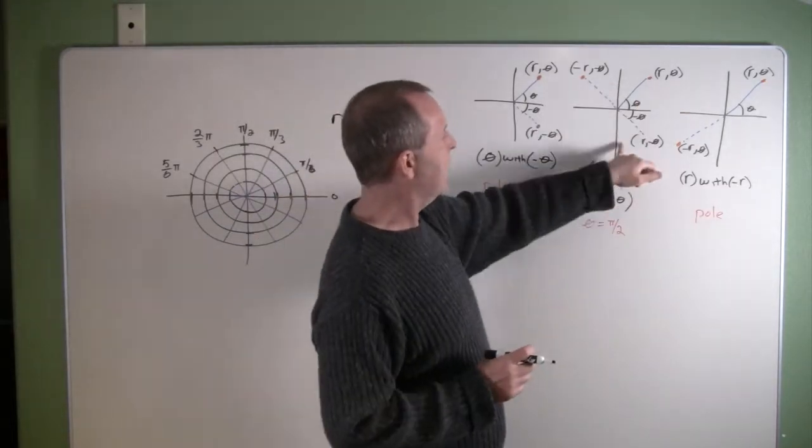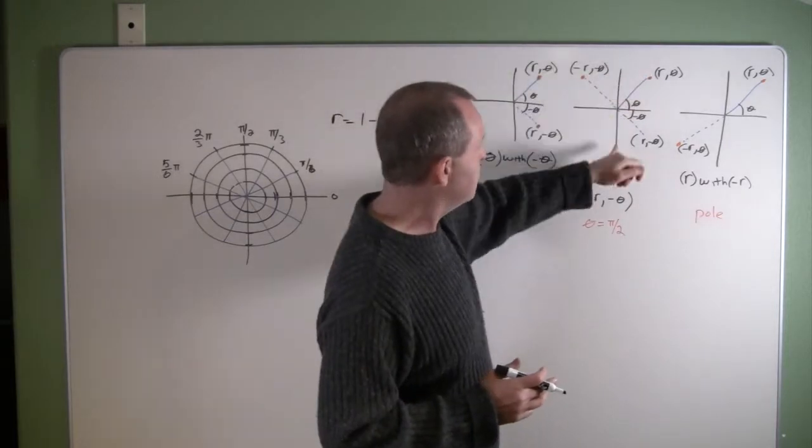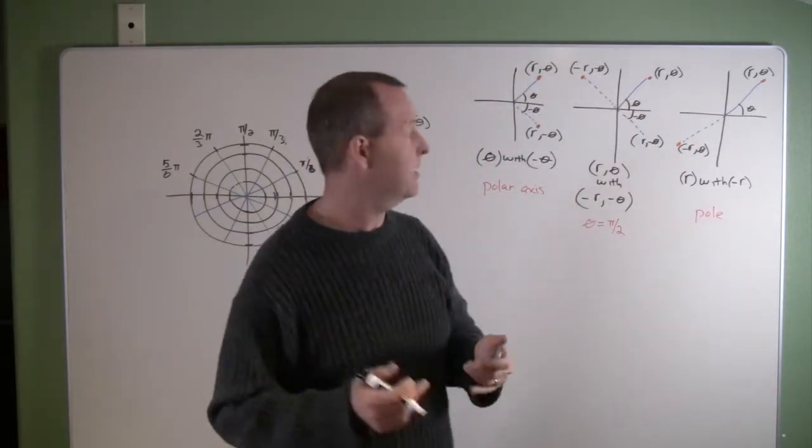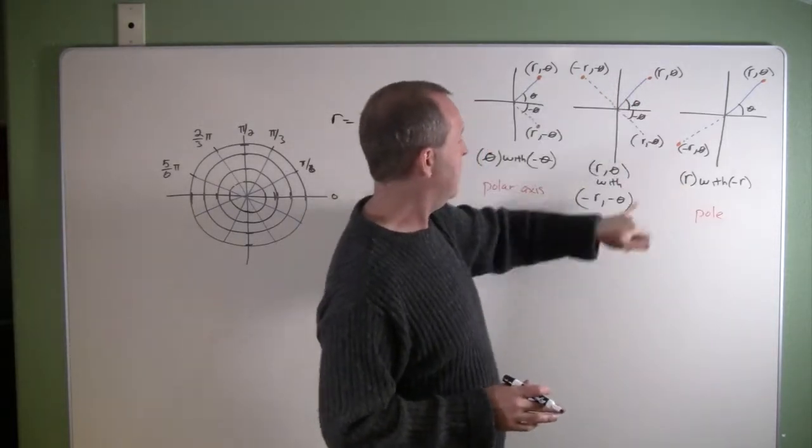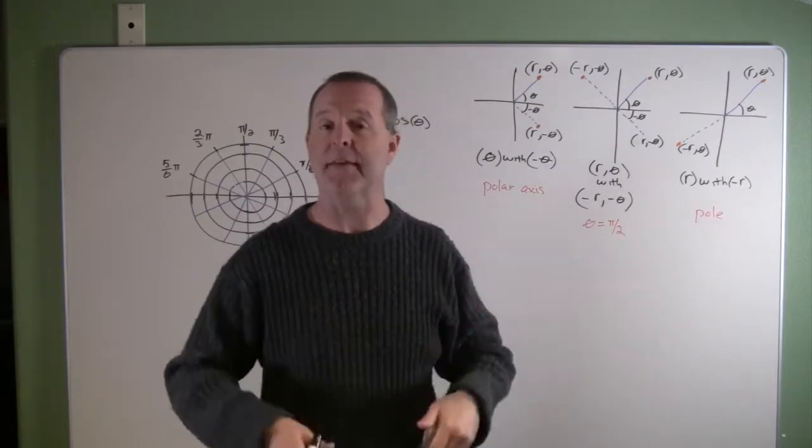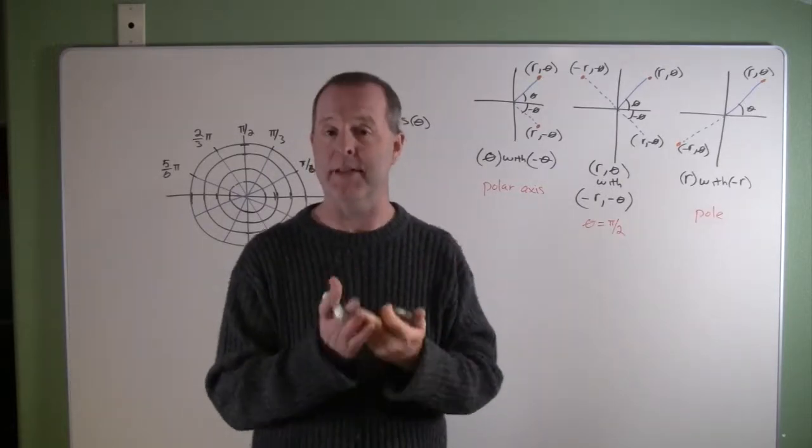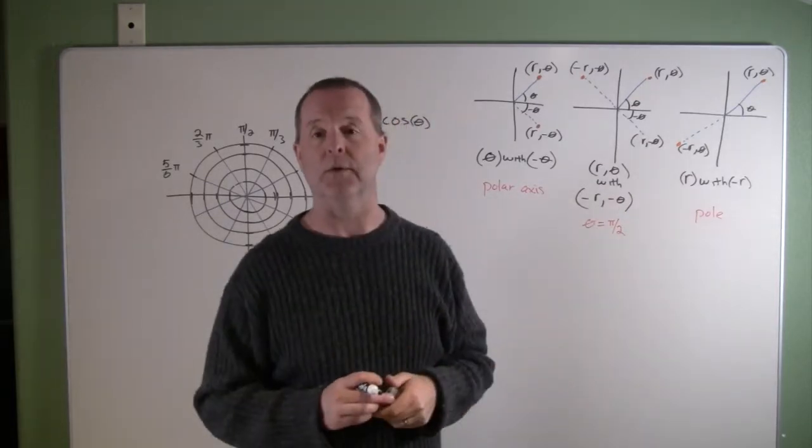Likewise, in the second one right here, there's symmetry about the theta equals pi halves or the y-axis when we replace r and theta with negative r and negative theta. And if we do that and we get the same equation, then we know we have symmetry with the y-axis or with the theta equals pi over 2 axis.